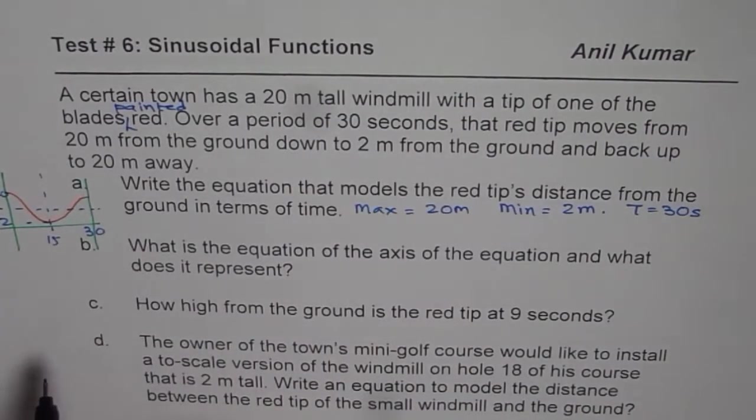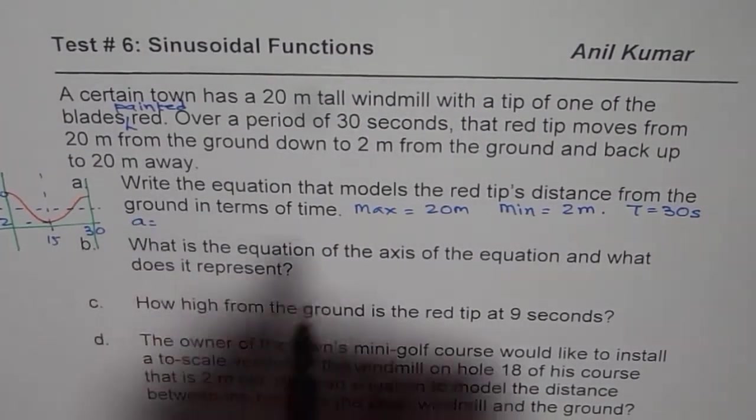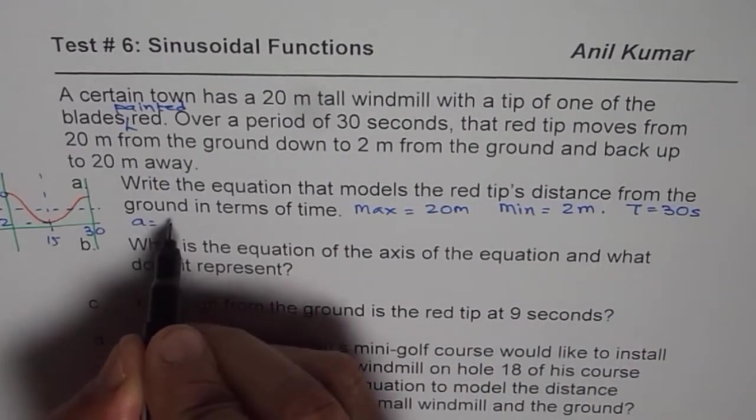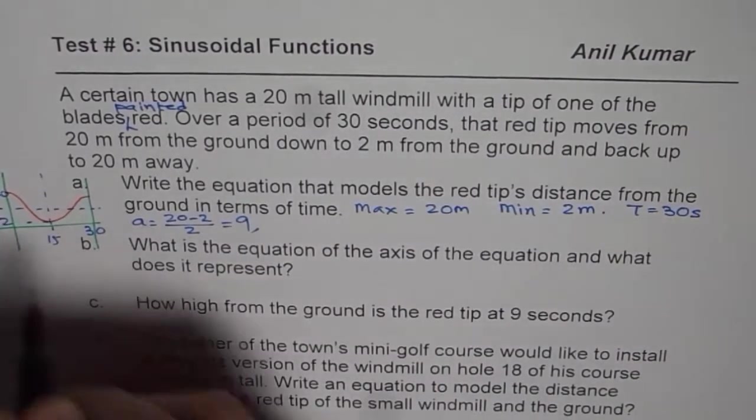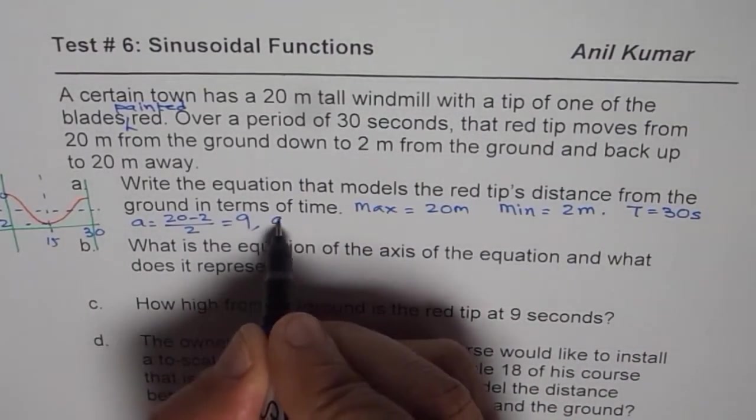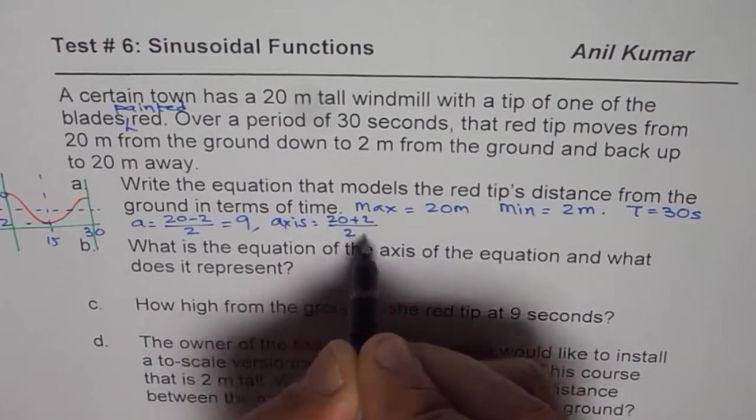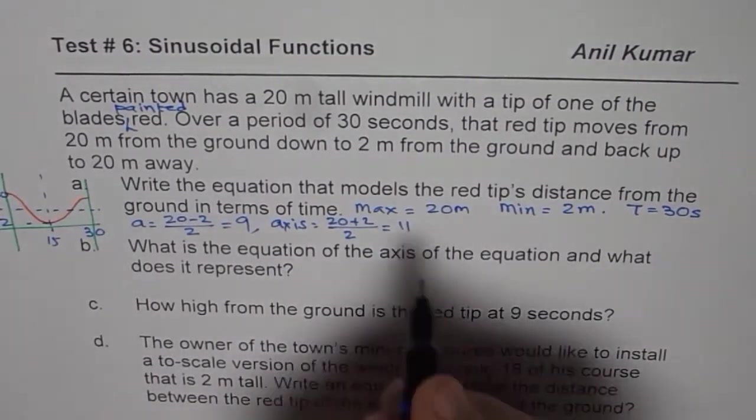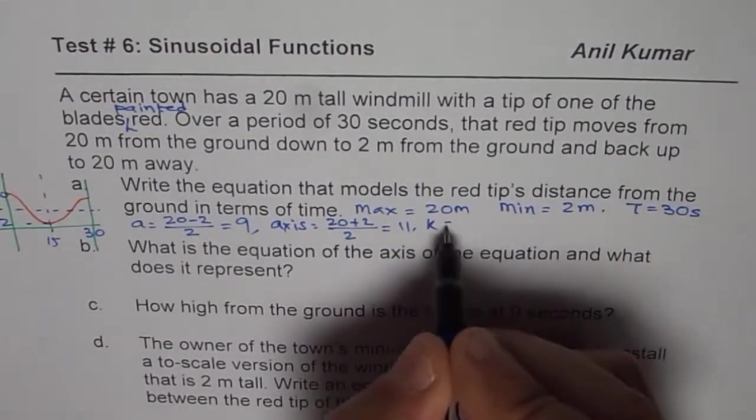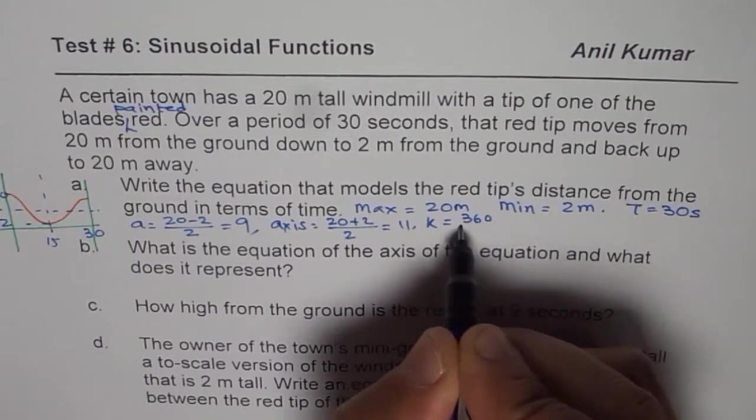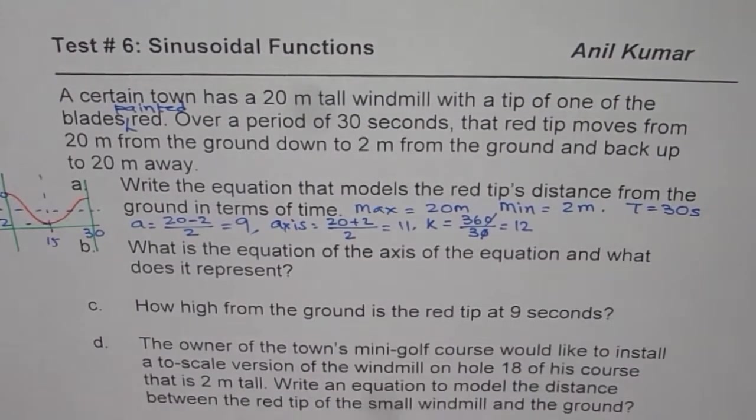So let us find the equation of this function by first amplitude is equals to maximum minus minimum divided by 2. That means 20 minus 2 divided by 2. So the amplitude is 9. The axis will be, let us say, axis is equal to average value. So we will add 20 and 2 and divide by 2, giving us a value of 11. Time period is K and time period is 30. And therefore, K is 360 divided by 30. So that gives us a value of 12.